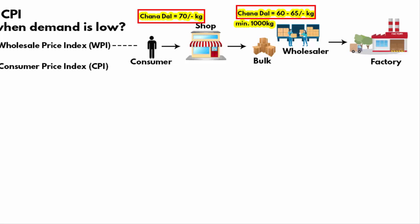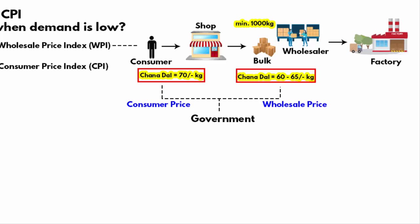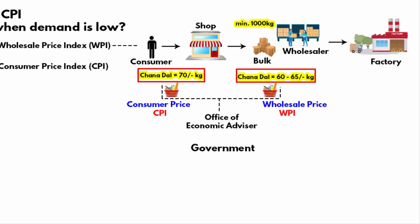There are prices for every product in the market. Whenever there is a change in the price of a product at the consumer and wholesale level, the government keeps track of it. The government observes and calculates the wholesale as well as consumer prices of a basket of essential goods over a period of time. That is how the Wholesale Price Index and Consumer Price Index are derived. In India, this data is published by the Office of Economic Advisor under the Ministry of Commerce and Industry.